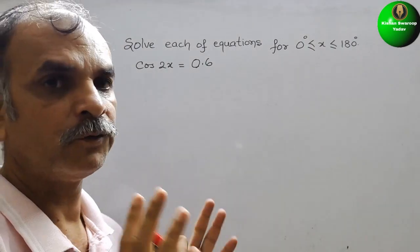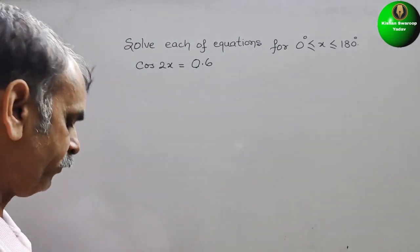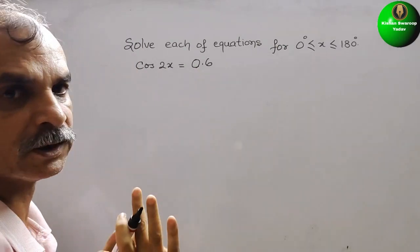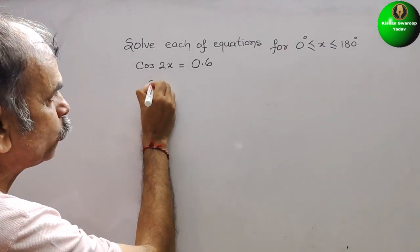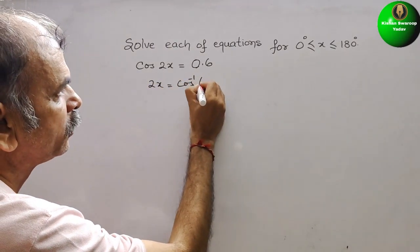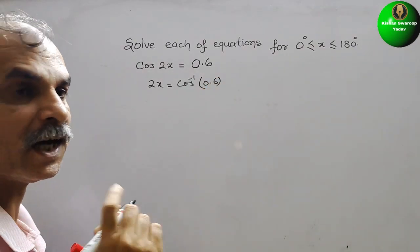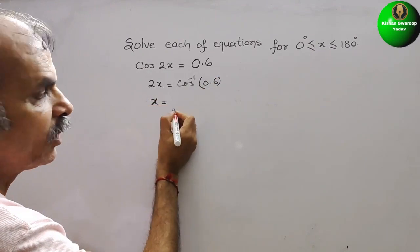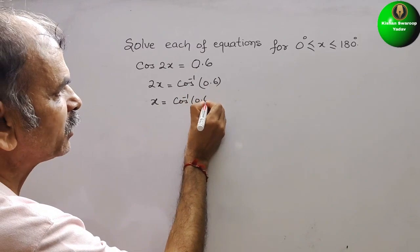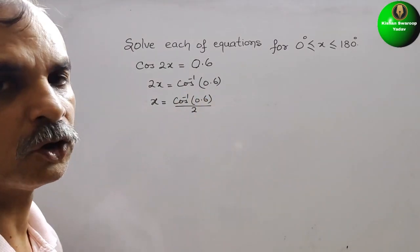See how we have to solve this. First, we will write this using cos inverse. So we can say 2x is equal to cos⁻¹(0.6). Therefore, x is equal to cos⁻¹(0.6) divided by 2. So this is your solution.